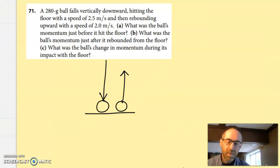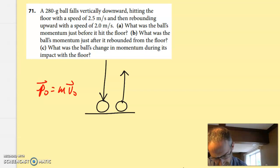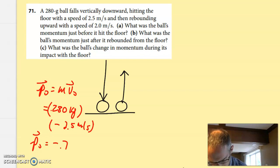On number 71, we have a ball that falls down, hits the floor, and bounces back up, not quite to the same height, a little bit less, just like it would be in real life. Part A says, what's the ball's momentum just before it hits the floor? Easy enough. All you have to do is say the initial momentum is the mass times the initial velocity. It's falling downward, so the mass, notice I've converted that to kilograms, times the velocity, which will be a negative 2.5 meters per second. If you do that, you end up getting an initial momentum of negative 0.70 kilogram meters per second.